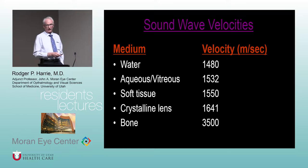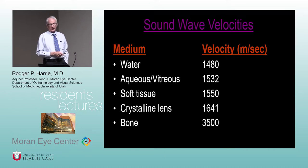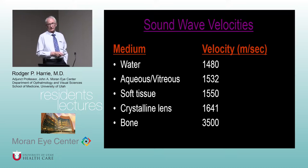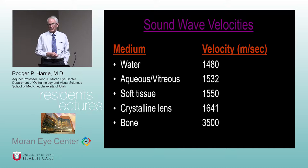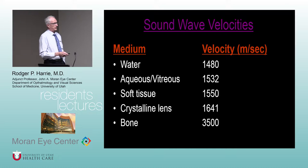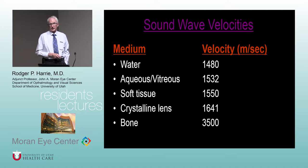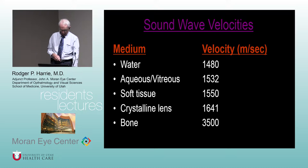Sound wave velocity depends on media density — the denser the media, the faster sound travels. Through water it's about 1480 m/s, aqueous and vitreous about 1532 m/s, which is where the standard velocity is set on our biometry instruments. Soft tissue, crystalline lens, and bone are progressively denser, so the denser the tissue, the higher the sound velocity.